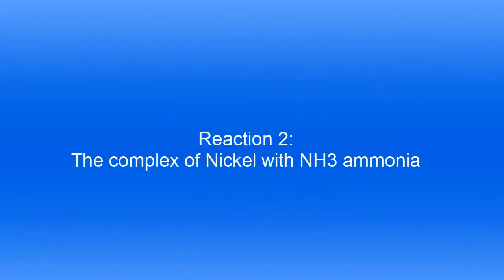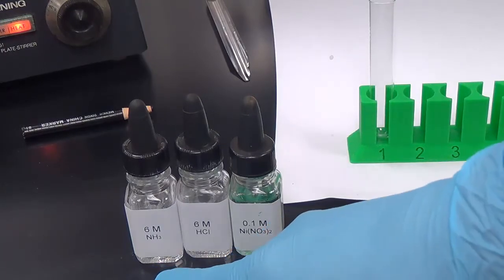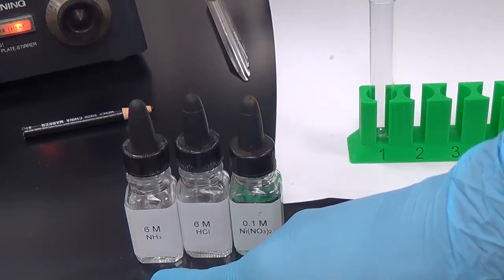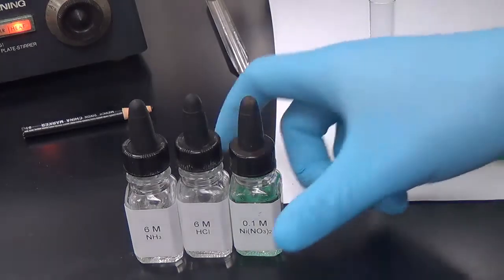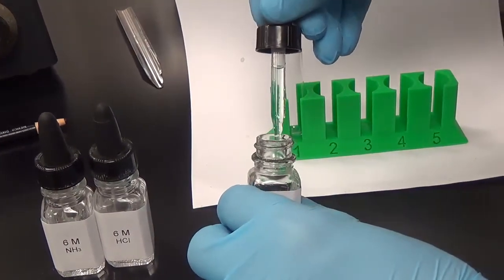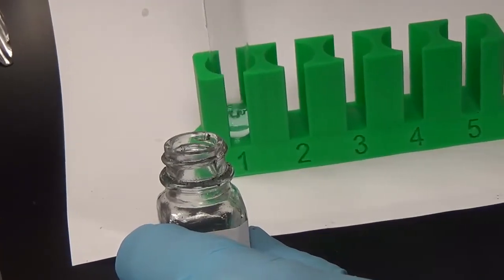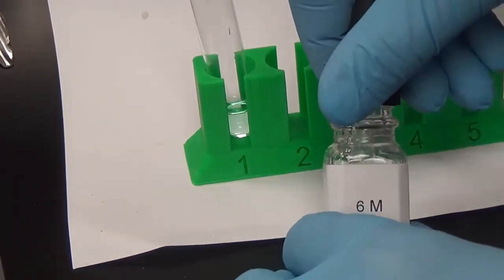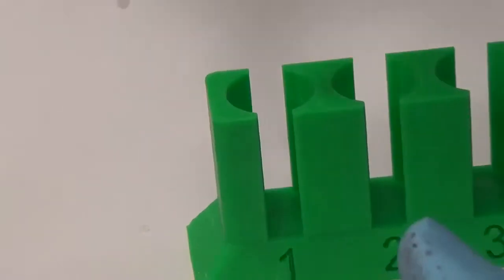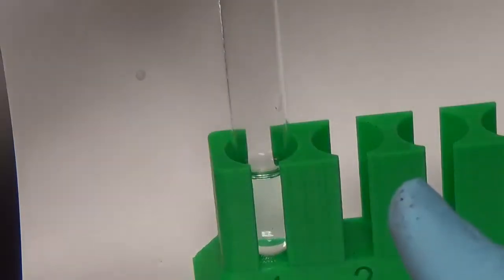Reaction number two is reacting nickel nitrate — nickel plus two — with ammonia, which is a weak base and a weak source of OH minus. That forms the complex ion nickel-ammonia, with NH3 complexed six times. We add some nickel nitrate to a clean test tube — notice the light green color — then add about two or three swigs of NH3 to form the complex ion.